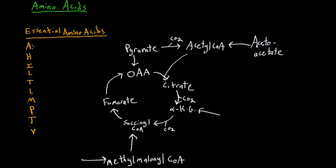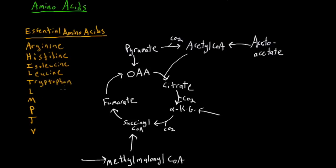So writing them out: 'Any' is arginine, the second is histidine, then isoleucine, and leucine. There is tryptophan and threonine — since we don't have a codification conflict here, I'll put tryptophan. Then we also have lysine, methionine, phenylalanine, our other T which is tyrosine, and finally valine.